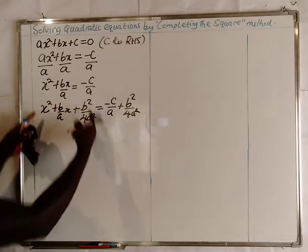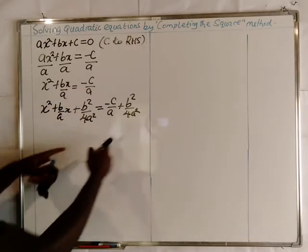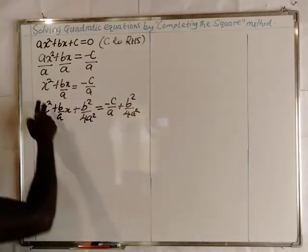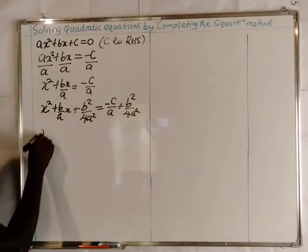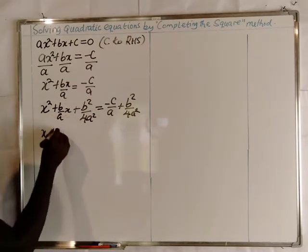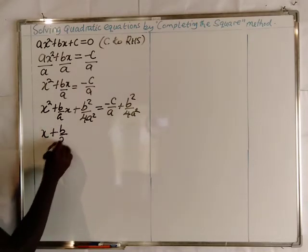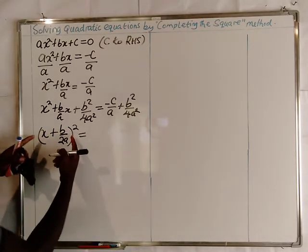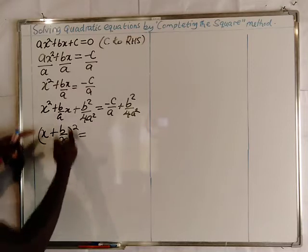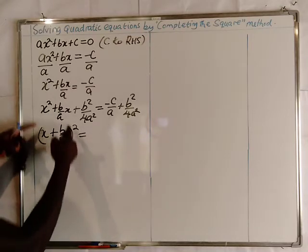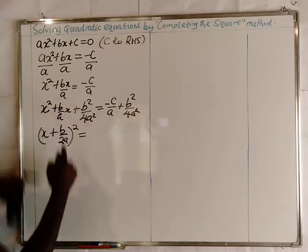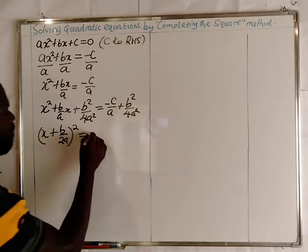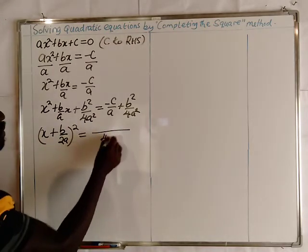On the left hand side, we factorize to get x plus b over 2a, all squared. This is because x plus b over 2a is a repeated factor of the expression on the left hand side. On the right hand side, we express everything as a single fraction with a common denominator.